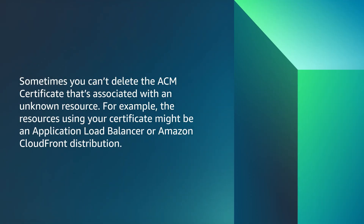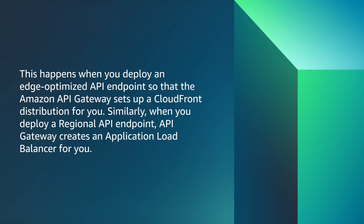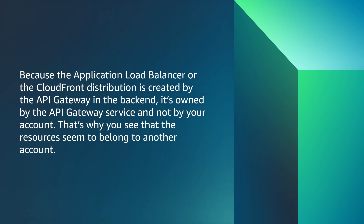Sometimes you can't delete the ACM certificate associated with an unknown resource. For example, the resources using your certificate might be an application load balancer or an Amazon CloudFront distribution. This happens when you deploy an edge-optimized API endpoint so that the Amazon API Gateway sets up a CloudFront distribution for you. Similarly, when you deploy a regional API endpoint, API Gateway creates an application load balancer for you. Because the application load balancer or the CloudFront distribution is created by the API Gateway in the backend, it's owned by the API Gateway service and not by your account. That's why you see that the resources seem to belong to another account.